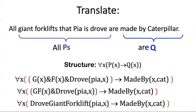For example, let me show you two other translations you might have used that have less logical structure. Maybe you invented a predicate GF for being a giant forklift and you didn't separate out those predicates and you kept drove as a relation. Or maybe you just made one relation, like drove a giant forklift and Pia did that for object x. Pia drove the giant forklift x.